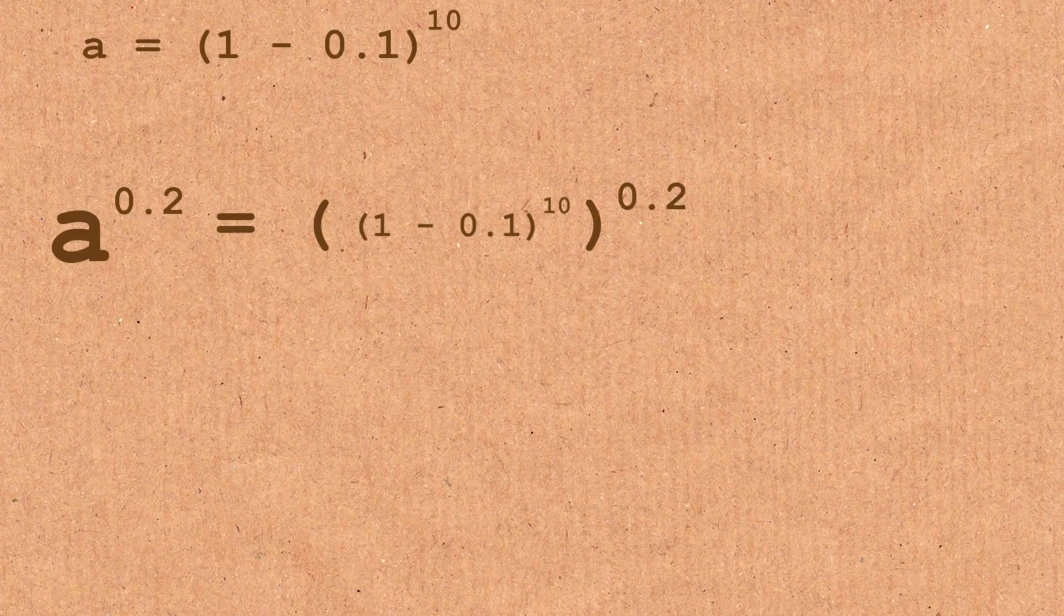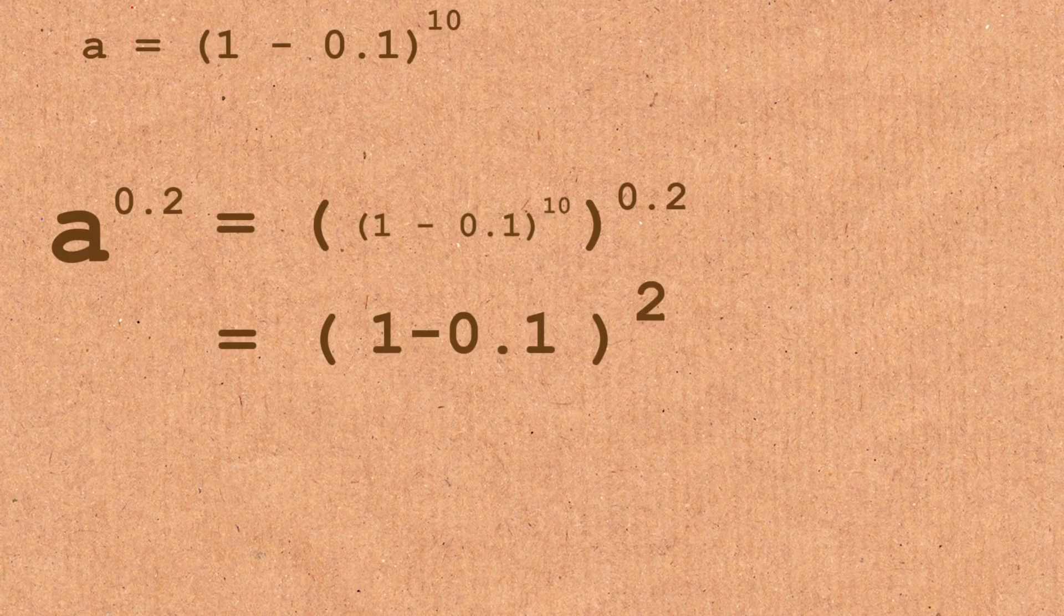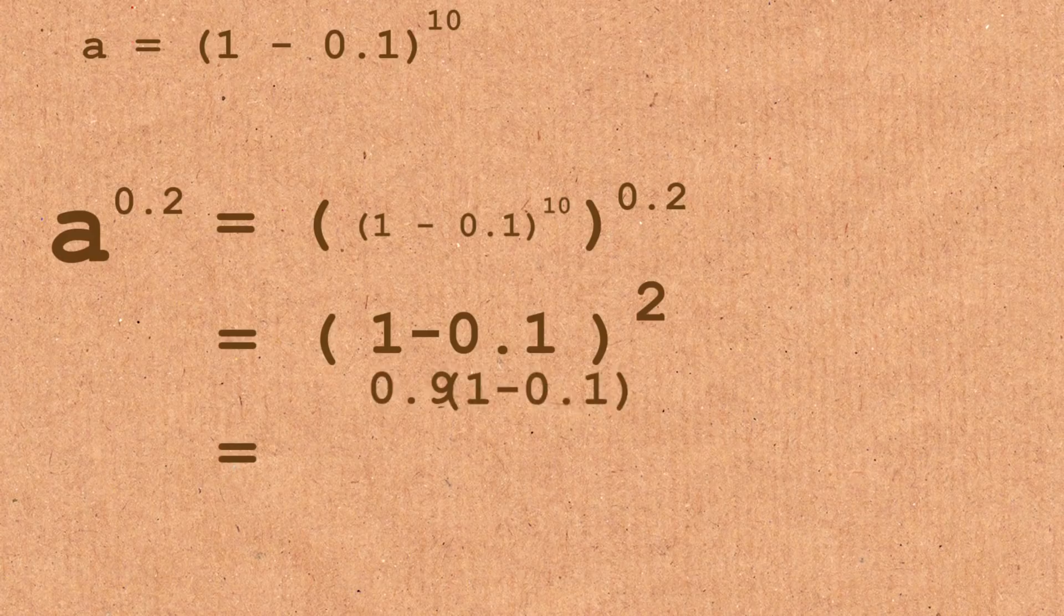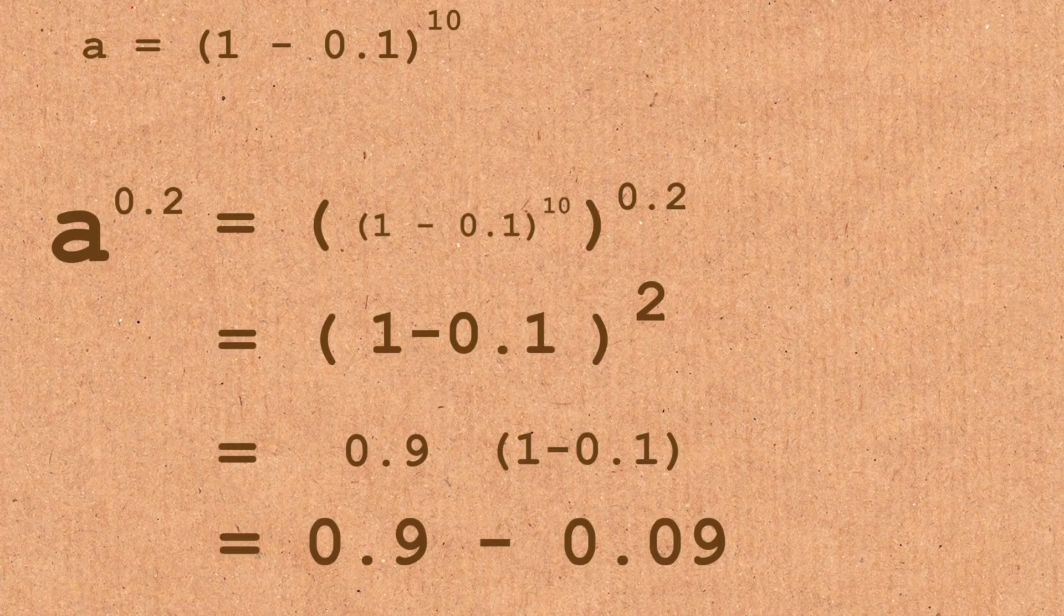And now I have a choice here. I'm going to use this result, 0.9 into 1 minus 0.1 equals 0.9 minus 0.9 equals 0.81. So I've got the next one. And you see I'm doing it all the time by subtracting this from that.